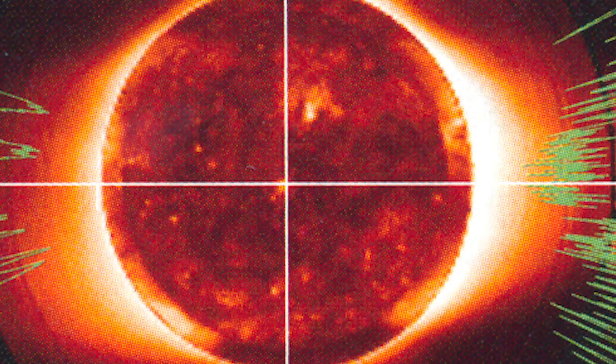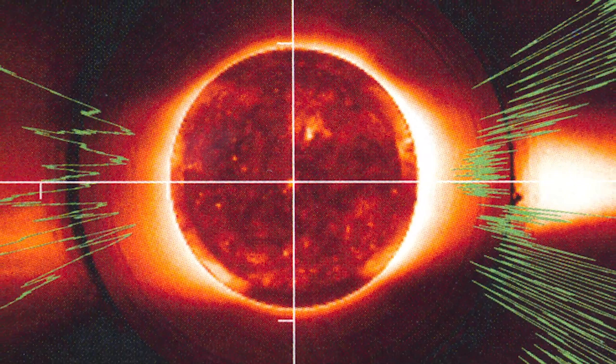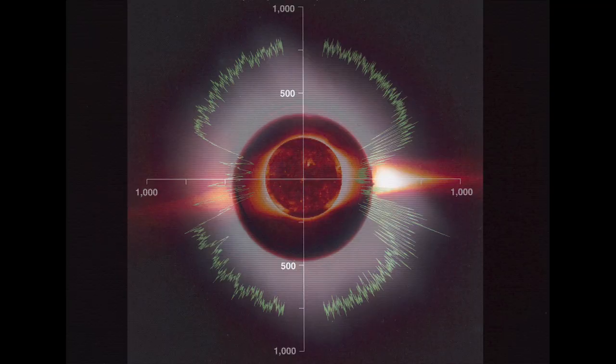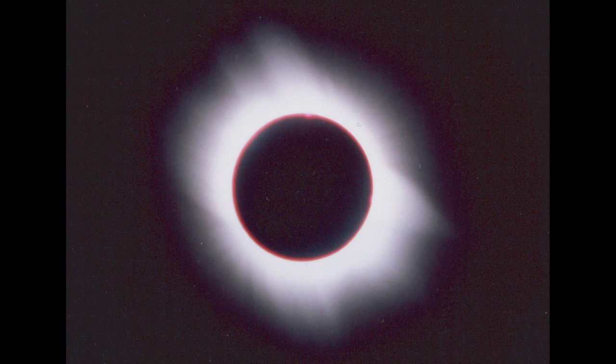That white light coronal holes are artifacts is significant because they have been interpreted as a key source of the solar wind — the plasma of charged particles streaming from the sun at high speed and filling space. The true source of the solar wind can only be defined by quantitative measurements of brightness.